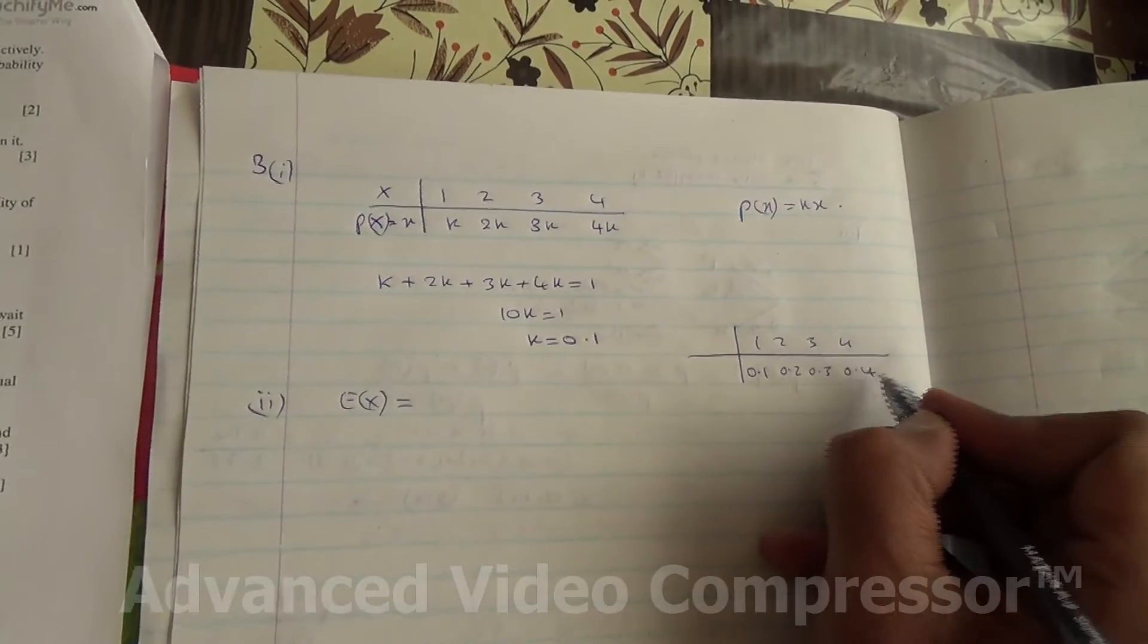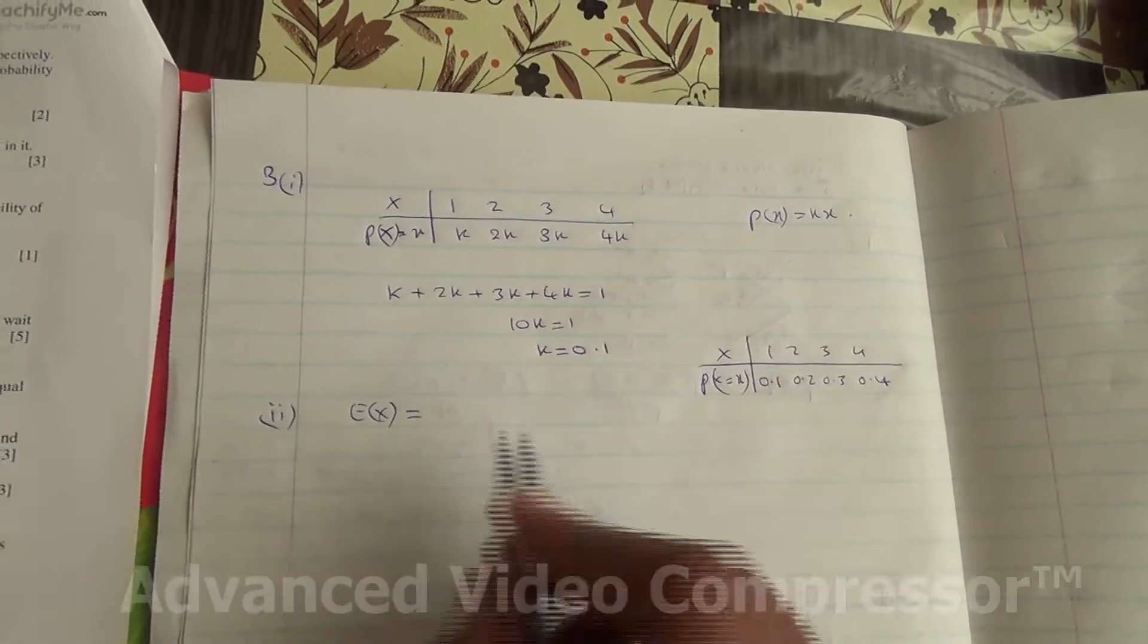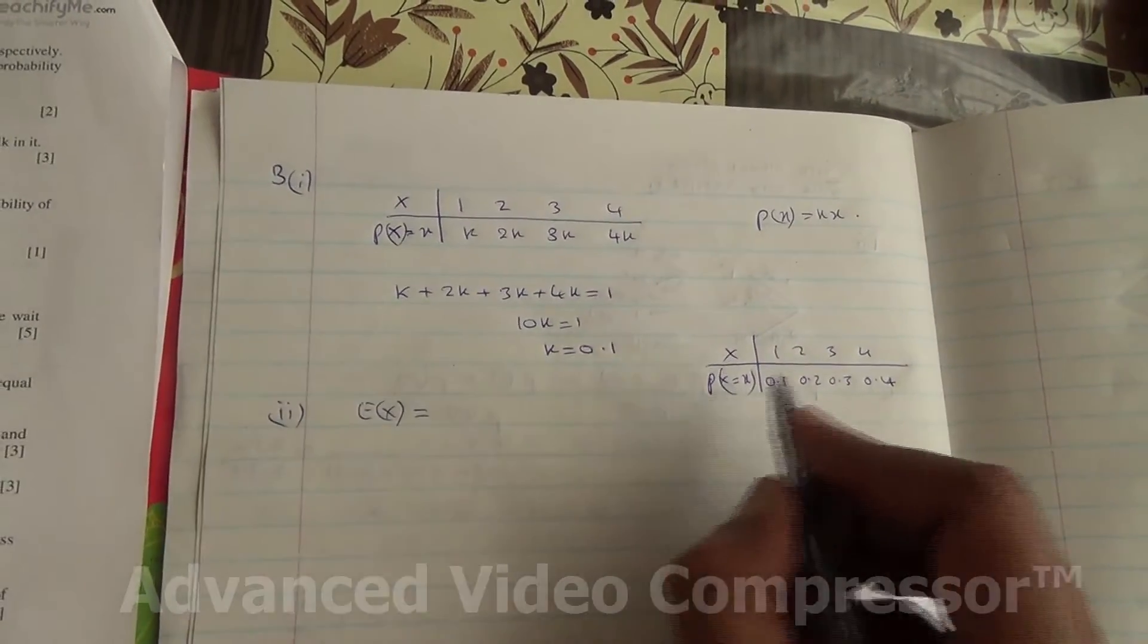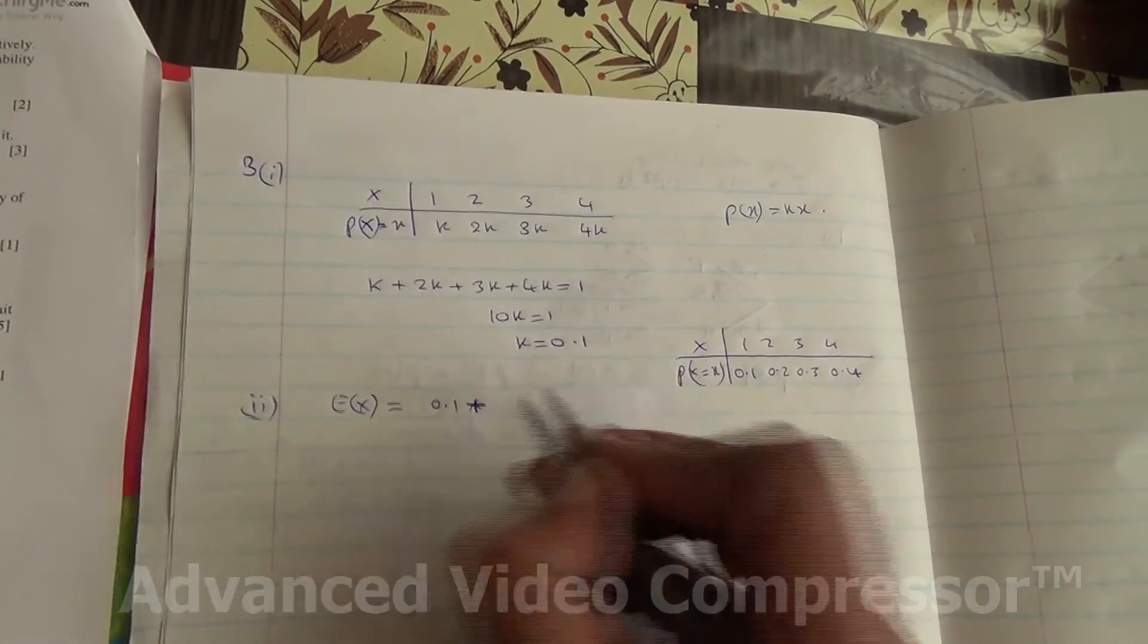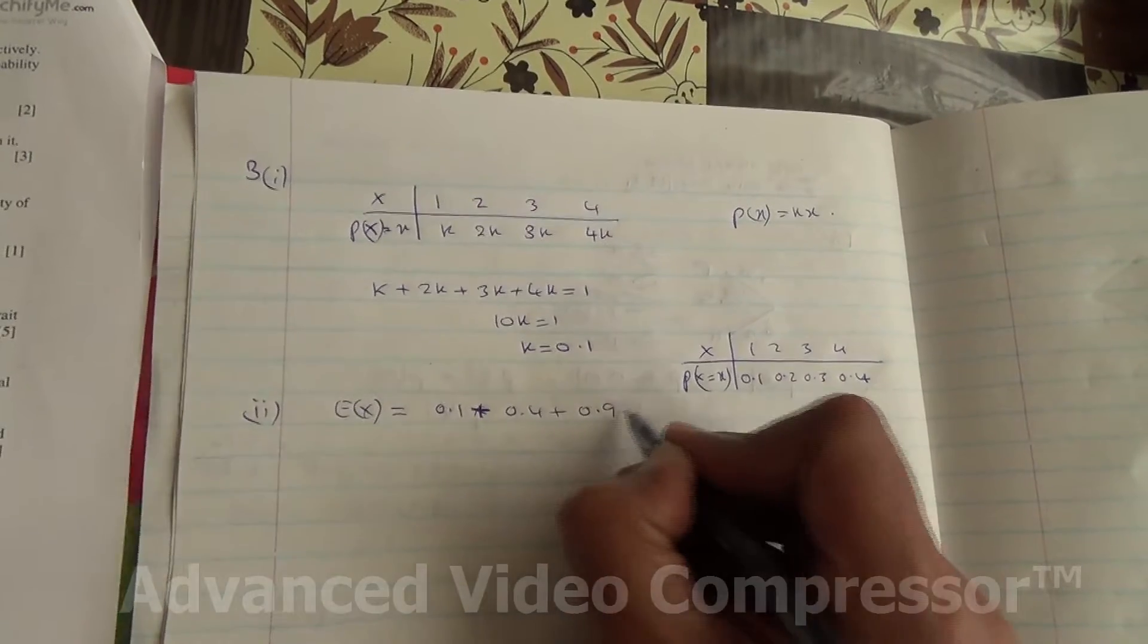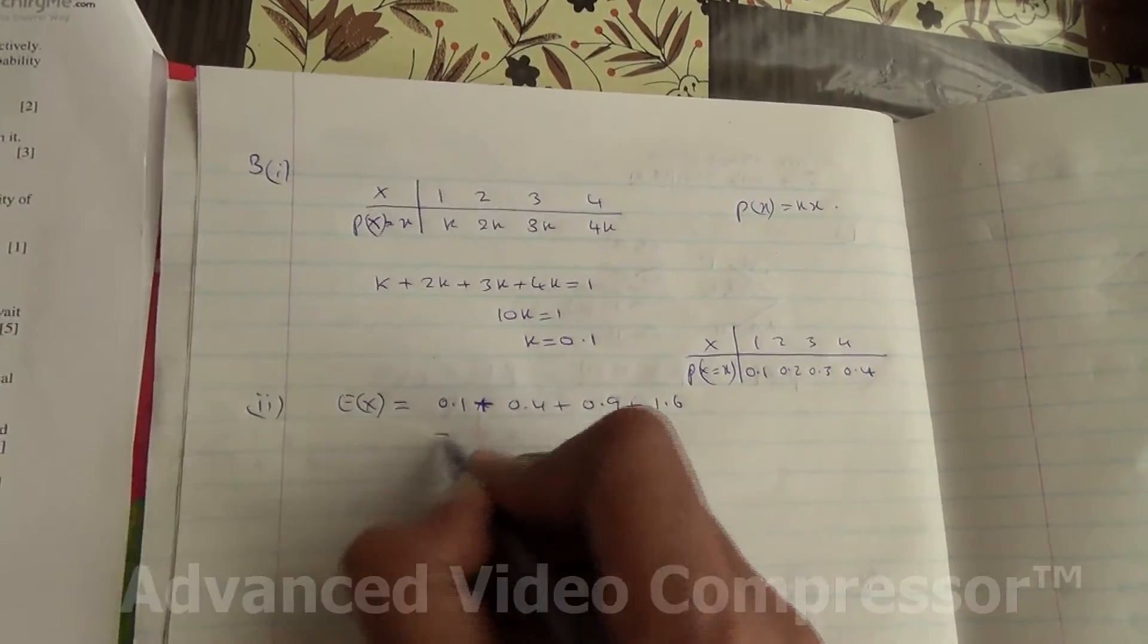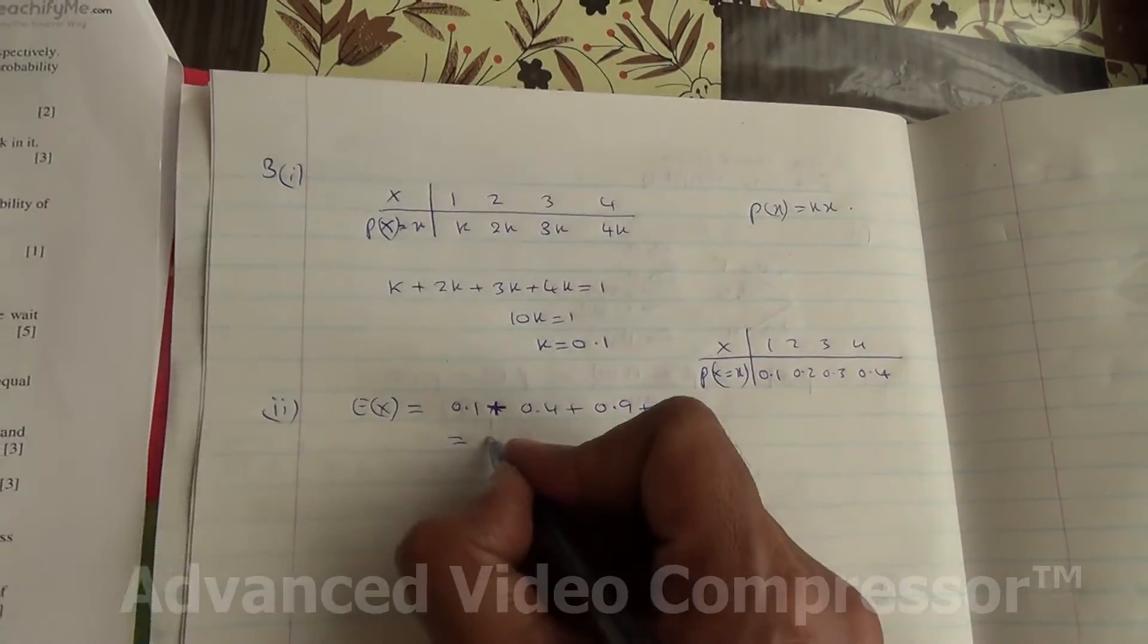So therefore now we need to find the mean of X. 1 times 0.1 is 0.1. So it plus 2 times 0.2 is 0.4 plus 0.9 plus 1.6. And if you do all of that, you're going to end up with 3.